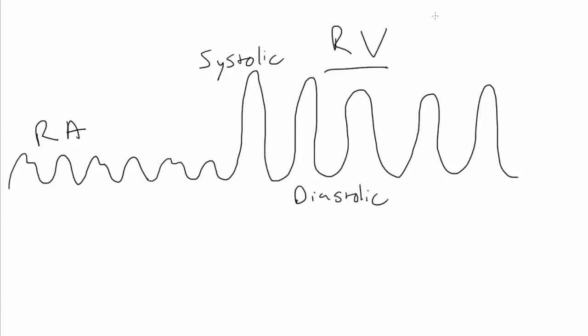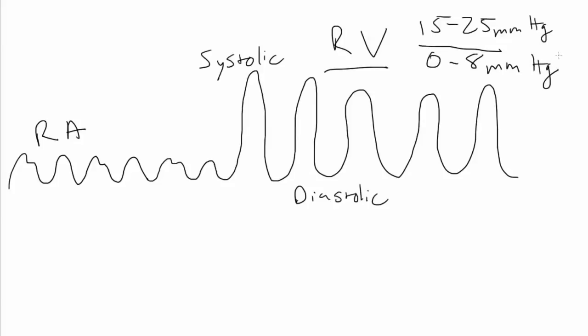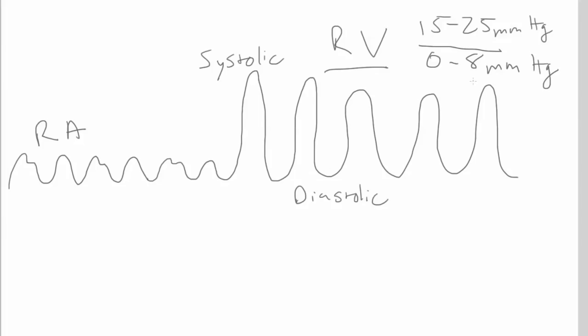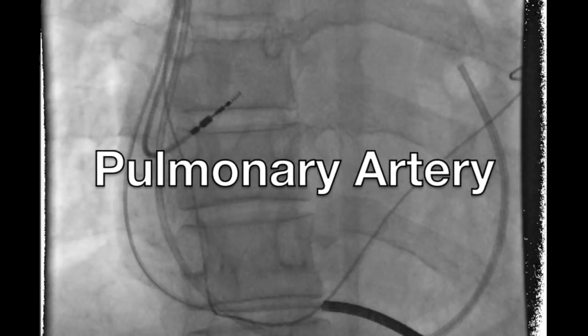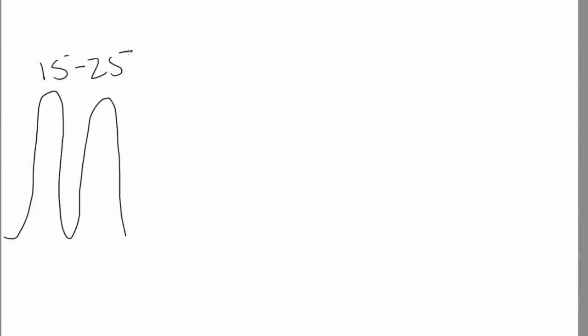Depending on what you read, your numbers top and bottom for the right ventricle should be something along the lines of 15 to 25 millimeters of mercury over zero to eight millimeters of mercury — and that would be normal RV pressure. The right ventricular waveforms are going to be these broad, upsloping, higher systolic pressure and essentially very little diastolic pressure, with systolic 15 to 25 and diastolic zero to eight.